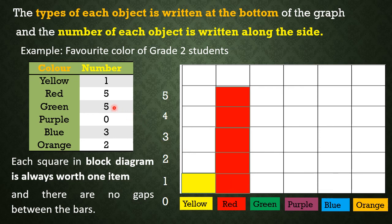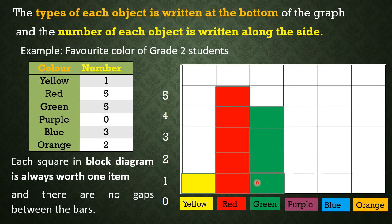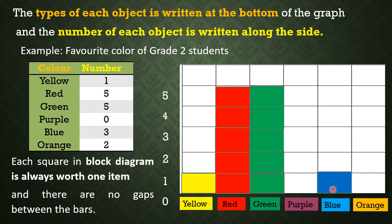There are also 5 students who like green, so we are going to color 5 squares. No students like purple — that means we are not going to color any of these blocks. Next, 3 students like blue color, so we are going to color 3 blocks.